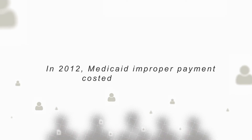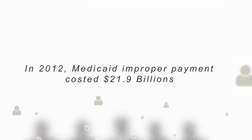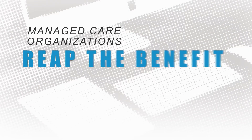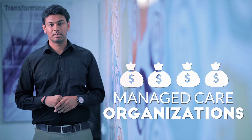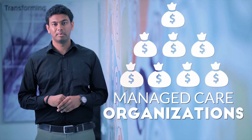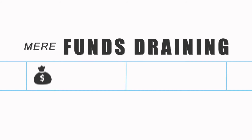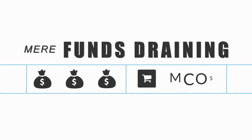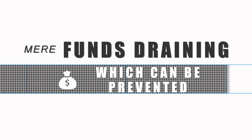In 2012, $21.9 billion in Medicaid improper payments were primarily due to ineligible beneficiaries. But more than the beneficiaries, it's the managed care organizations that reap the benefit. These MCOs across several states continue to receive funds from Medicaid for such ineligible beneficiaries. This is mere draining of funds by Medicaid into such a large bucket of MCOs, which can be effectively prevented.